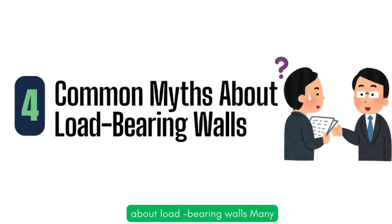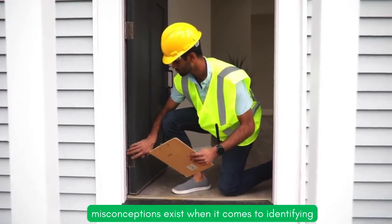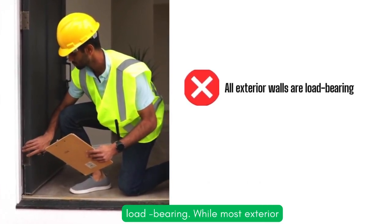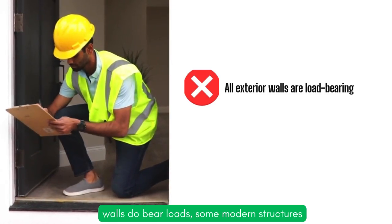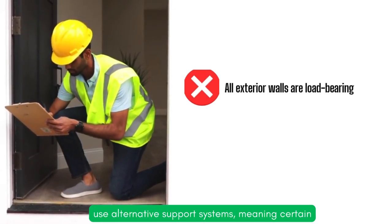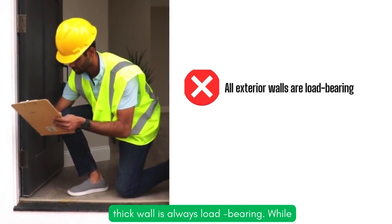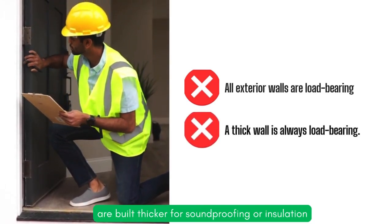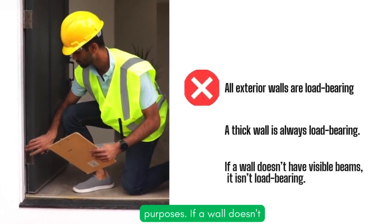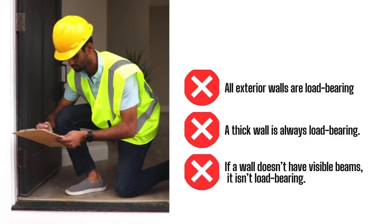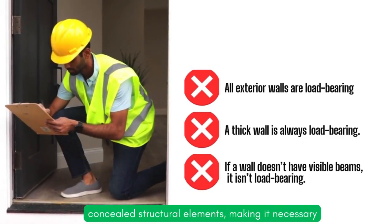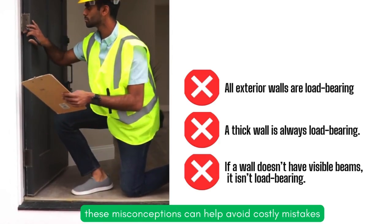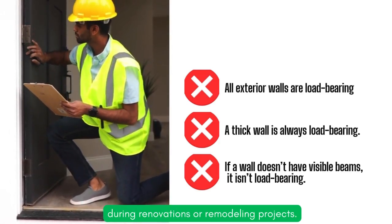Common myths about load-bearing walls: many misconceptions exist when it comes to identifying load-bearing walls. Let's clear up some common myths. Not all exterior walls are load-bearing — while most do bear loads, some modern structures use alternative support systems. A thick wall is not always load-bearing, as some partition walls are built thicker for soundproofing or insulation purposes. If a wall doesn't have visible beams, it isn't necessarily non-load-bearing, since some load-bearing walls distribute weight through concealed structural elements, making it necessary to inspect beyond surface appearances. Understanding these misconceptions can help avoid costly mistakes during renovations.